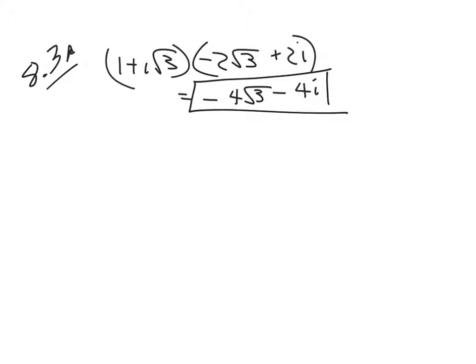Now we can also find that same answer using the trigonometric form. Remember we had x plus yi, which is rectangular form, and then we had r cis theta, which is the trigonometric form or the polar form from the last lesson.